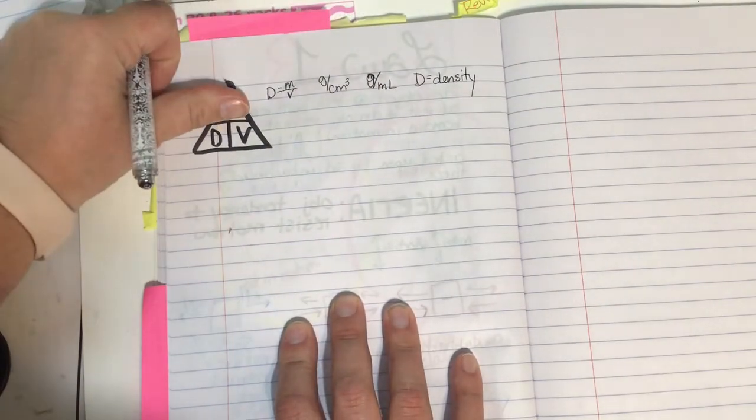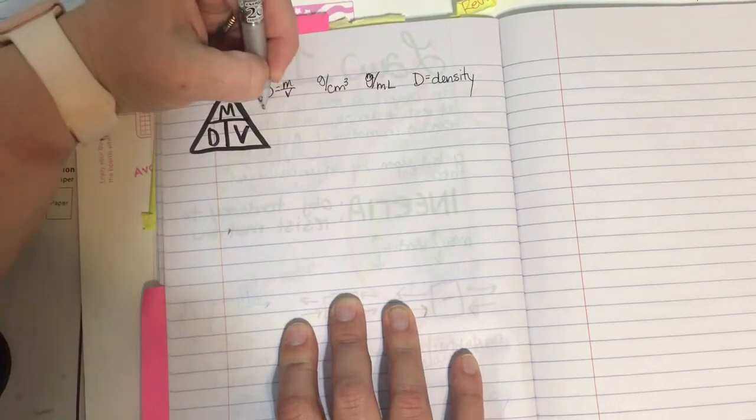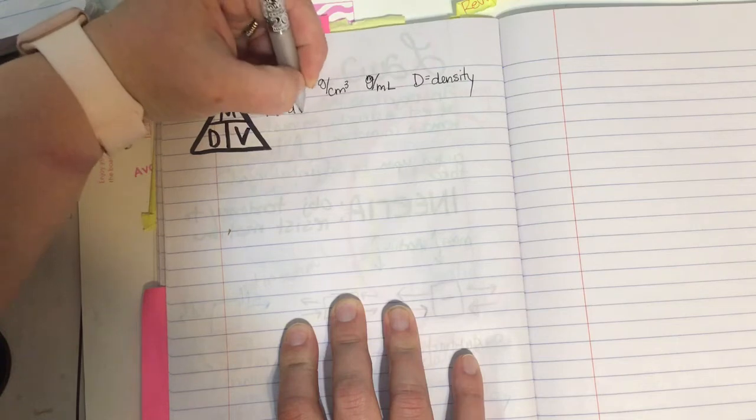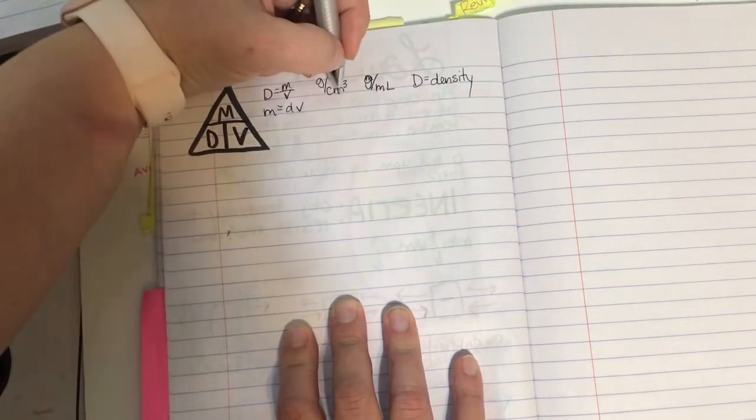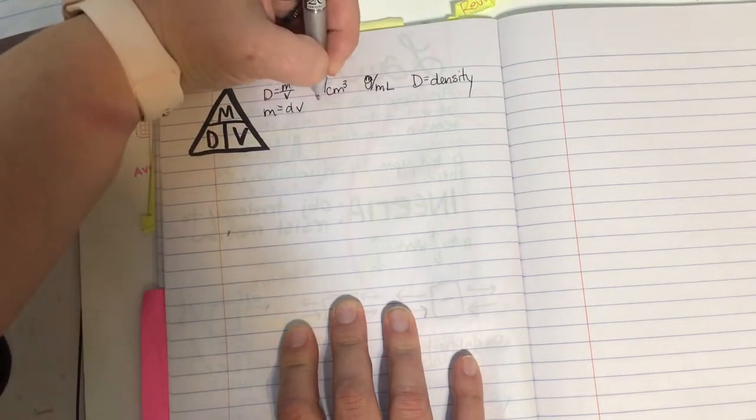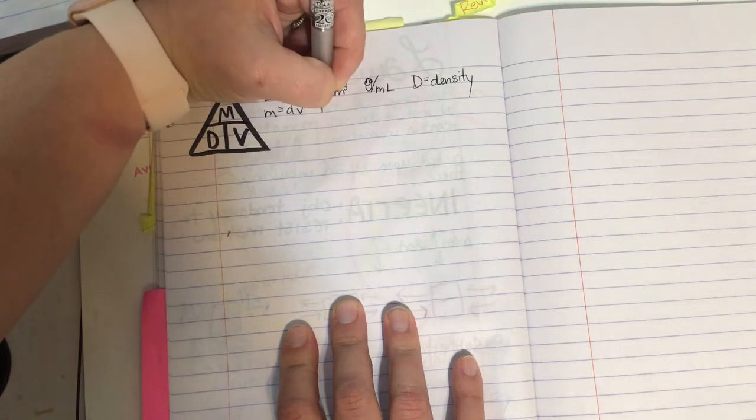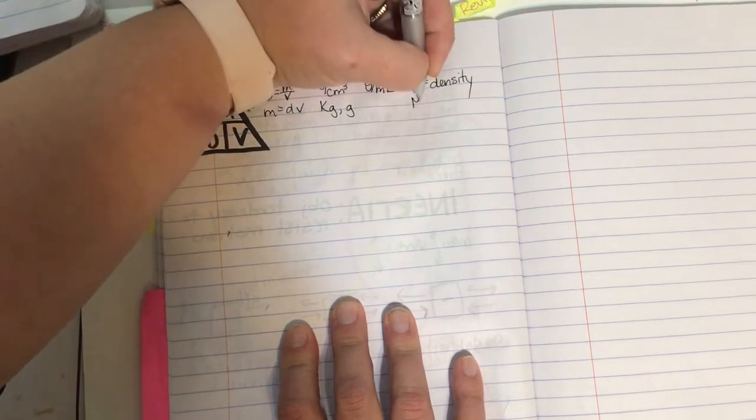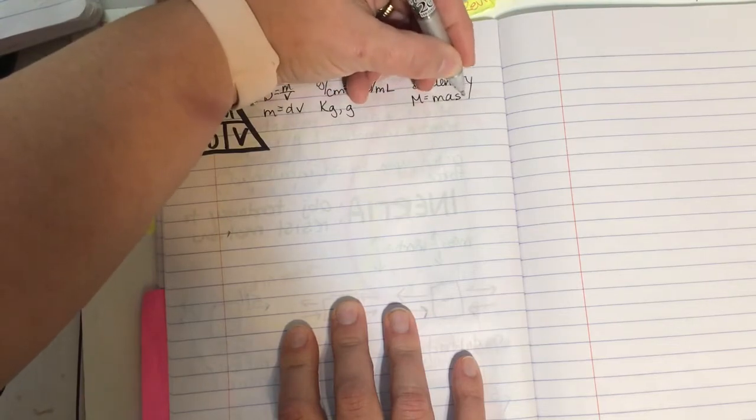If I'm solving for mass, it's density times volume. So my mass equals density times volume. Mass can be measured in grams or it could be measured in kilograms. And my M here equals mass.